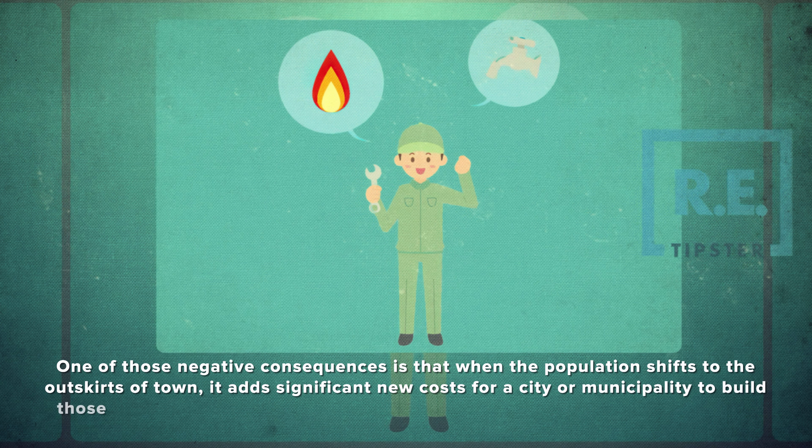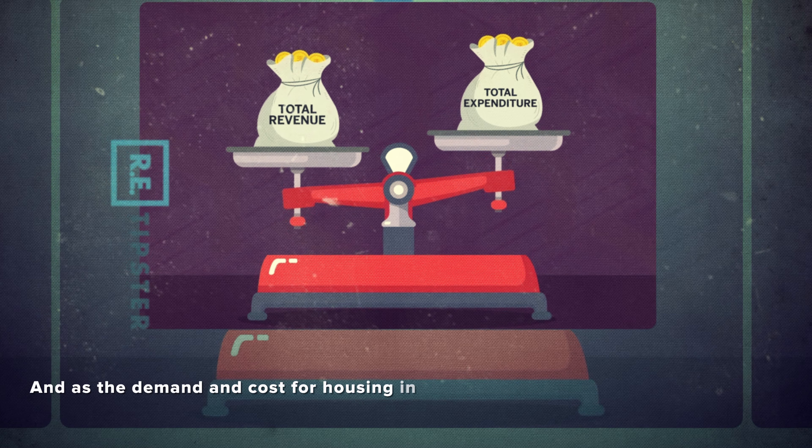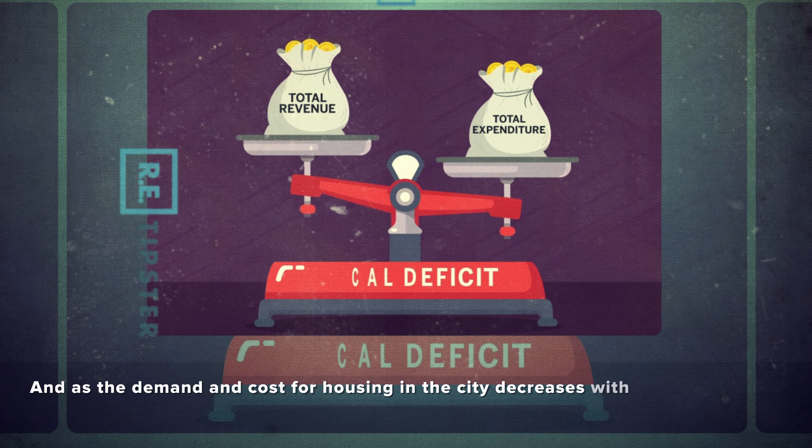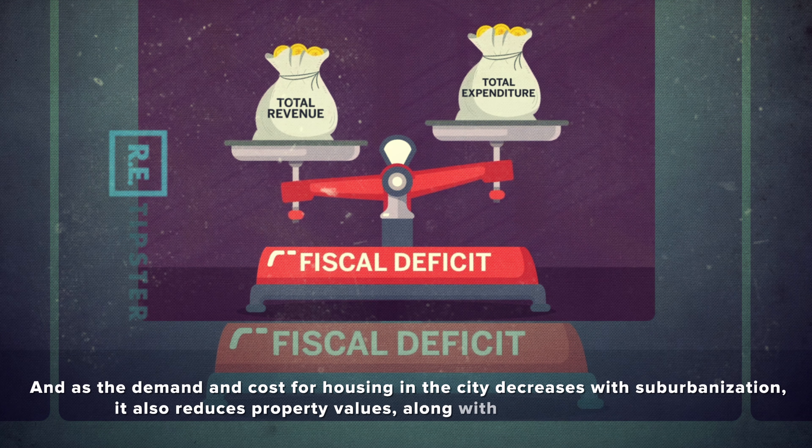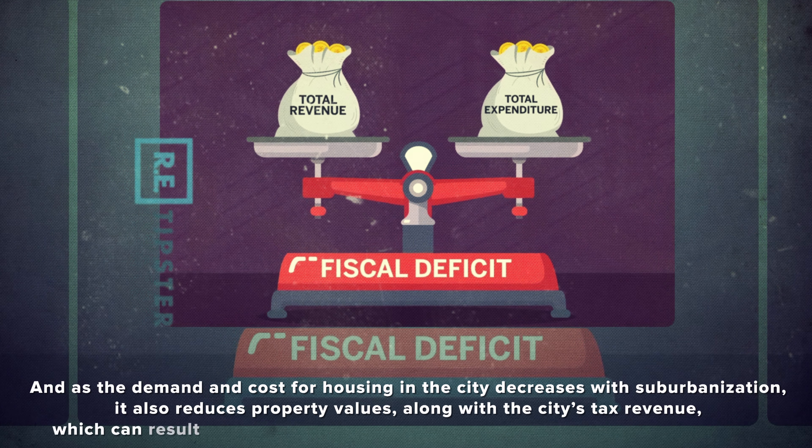Suburbanization also makes it more difficult to provide public transportation, which requires people to depend even more on their own cars — meaning more gas consumption and pollution. And as the demand and cost for housing in the city decreases with suburbanization, it also reduces property values along with the city's tax revenue, which can result in fiscal deficits and a lack of funding to provide city services.